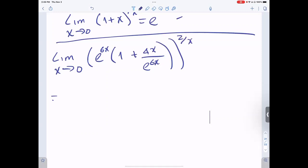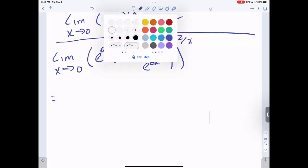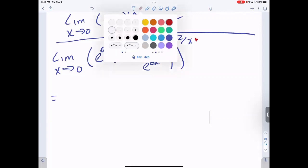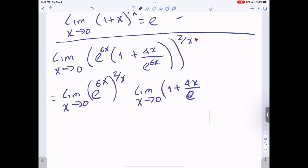And then I will separate the limits. I will create the limit when x approaches 0 of e to the 6x, everything to the power of 2 over x, times the limit when x approaches 0 of 1 plus 4x over e to the 6x.